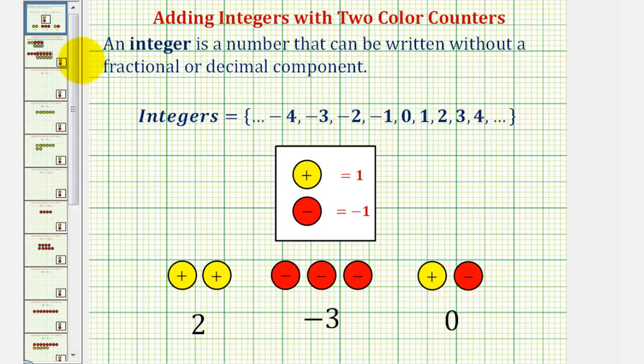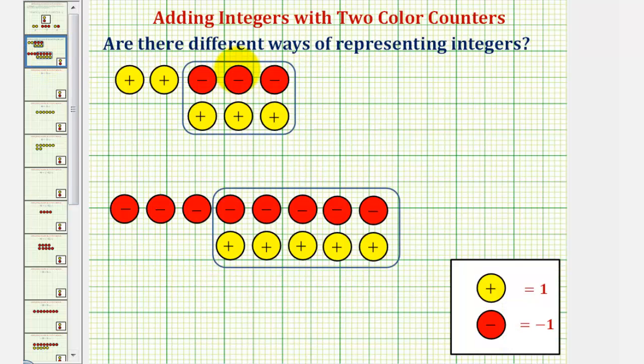It'll be important for our next lesson to recognize that there is more than one way to represent integers. If we take a look at these counters as a whole, every red and yellow counter results in zero, so the three red counters and the three yellow counters result in zero, which would leave us with two yellow counters or positive two. So this would be another way to represent positive two using our two color counters.